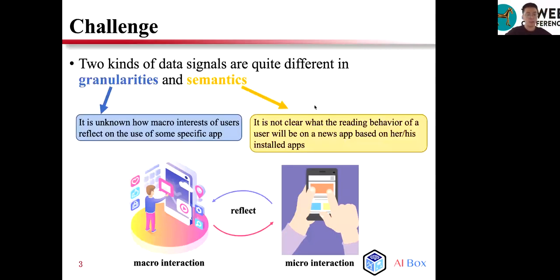To solve our task, it is key to effectively fuse information from both the macro and micro-interaction data. In fact, the two kinds of data signals are quite different. For example, it is not clear what the reading behavior of a user will be on a news app based on its installed apps. It is also unclear how micro-interests of users reflect on the use of some specific app. There is a semantic gap between the macro and micro views of user behavior.